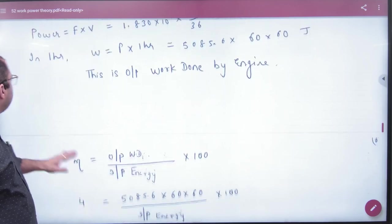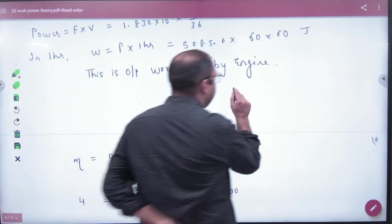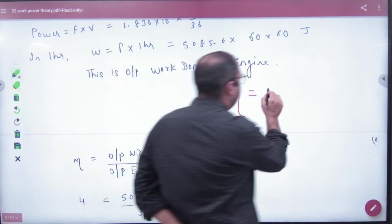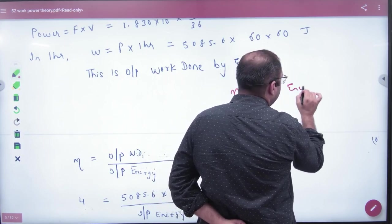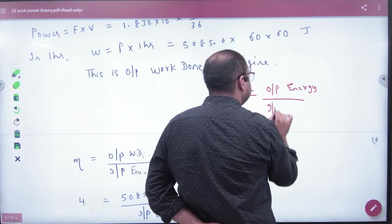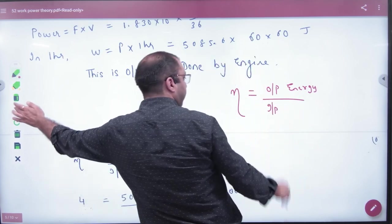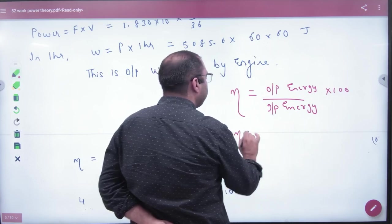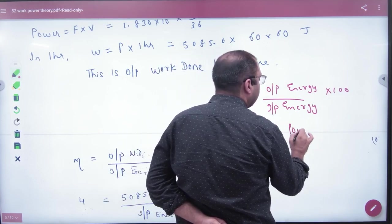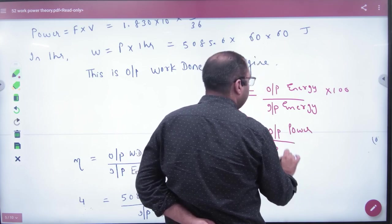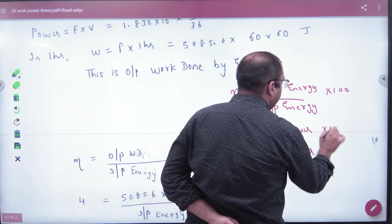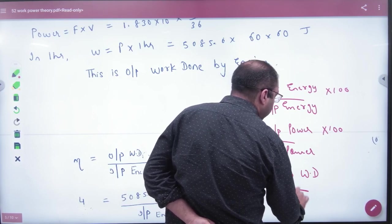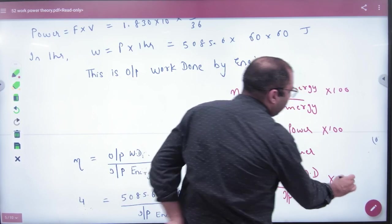Efficiency formulas can be written several ways. The symbol for efficiency is eta (η). It equals output energy divided by input energy times 100, or output power divided by input power times 100, or output work done divided by input energy times 100.